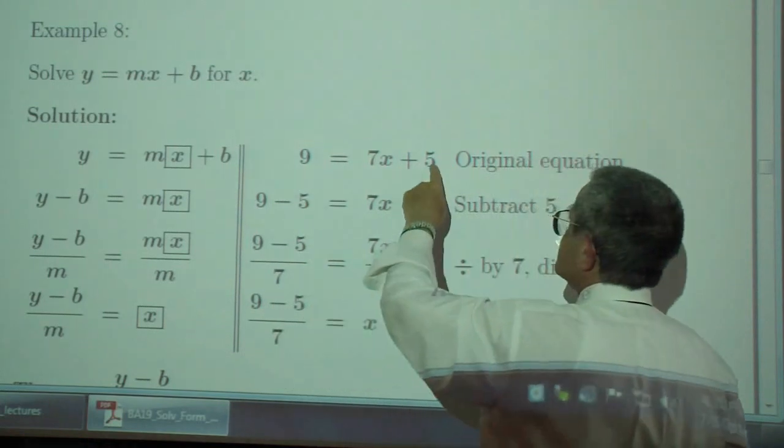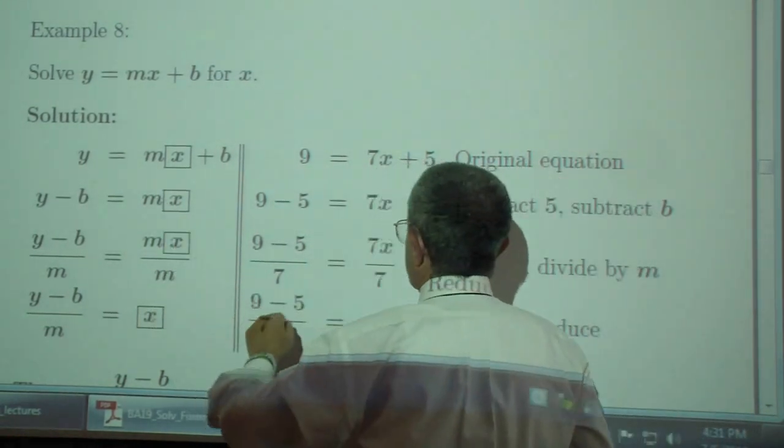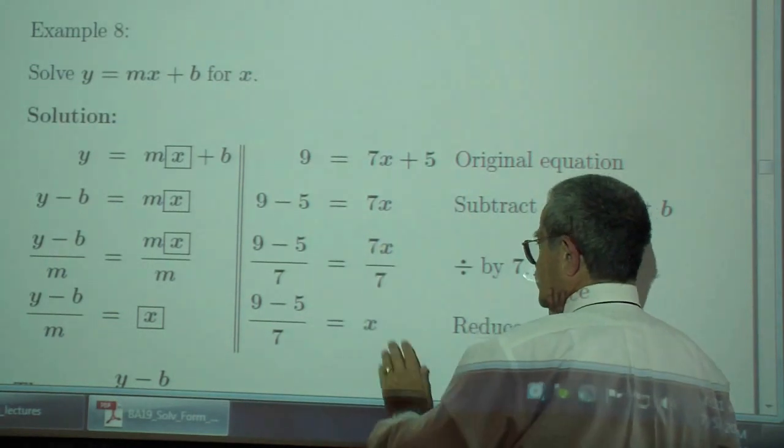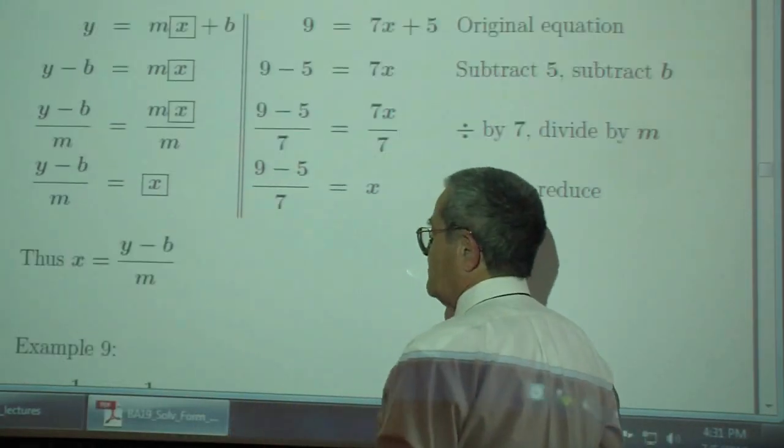First step, subtract B from both sides. Subtract 5 from both sides. Next, divide both sides by M. Divide both sides by 7. You are left with X, which is Y minus B over M.